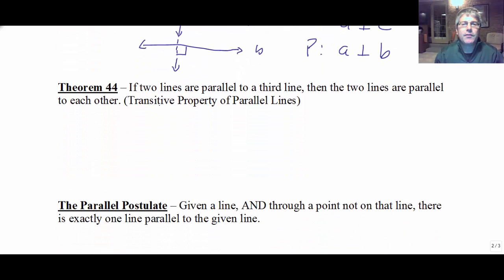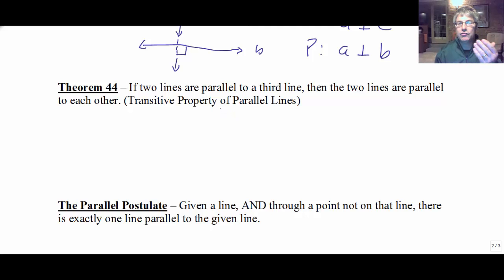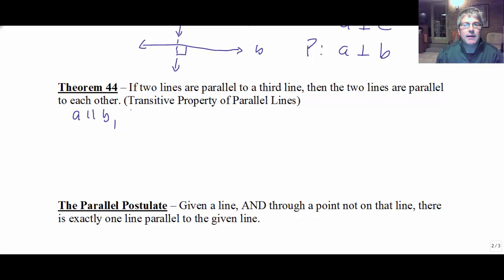The next theorem says if two lines are parallel to a third line, then the two lines are parallel to each other. This is the transitive property of parallel lines — parallel is transitive. Perpendicular is not transitive, but parallel is. So if A is parallel to B, and B is parallel to C, then A is parallel to C.